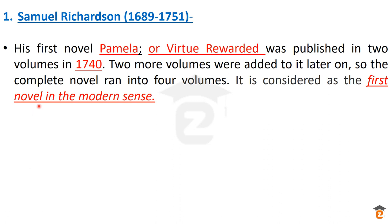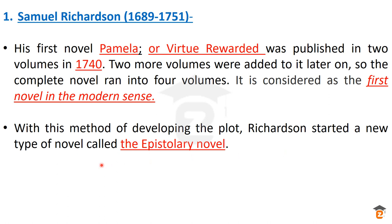Samuel Richardson lived from 1689 to 1751. His first novel, Pamela, also known as Virtue Rewarded, had Pamela as the central character. It was published in the first two volumes in 1740, with two more volumes added later, running into four volumes total. Pamela and Virtue Rewarded is considered the first novel in the modern sense, because the character of Pamela is presented so brilliantly. Richardson started a new style called the epistolary novel.